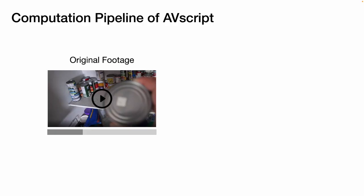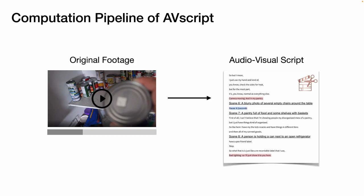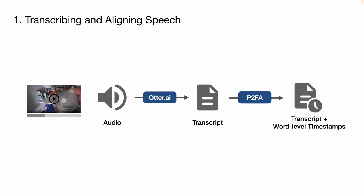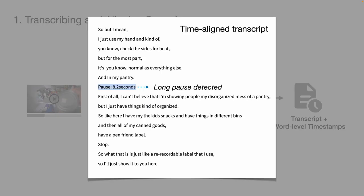AVScript generates audio-visual scripts from the original footage. Let me describe how its pipeline works. First, from the audio of the footage, AVScript transcribes and aligns the speech to create the transcript. Then, using the PTFA algorithm, we align the transcript with the audio at the word level. As a result, a time-aligned transcript is created. Pauses longer than 3 seconds are also marked in the transcript.